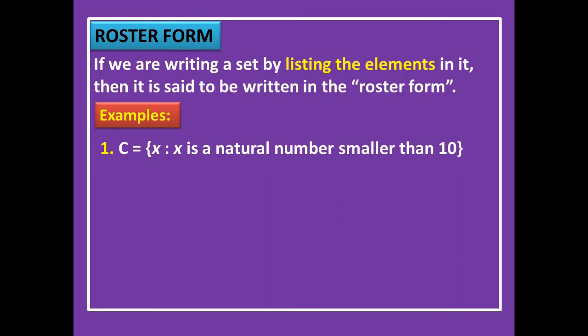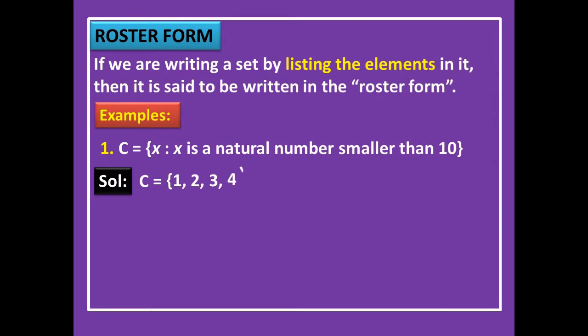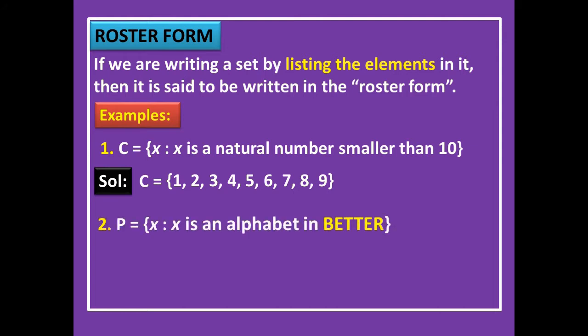Let C = {x : x is a natural number less than 10}. We have to list all natural numbers less than 10, that means 1, 2, 3, 4, 5, 6, 7, 8, 9. These numbers should be enclosed in brackets. For the second example, P = {x : x is an alphabet in the word BETTER}.